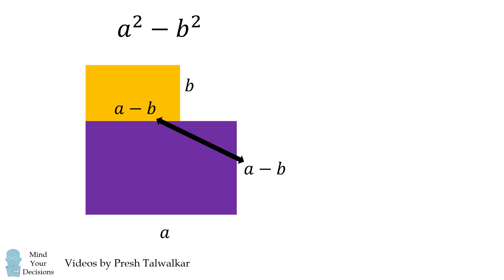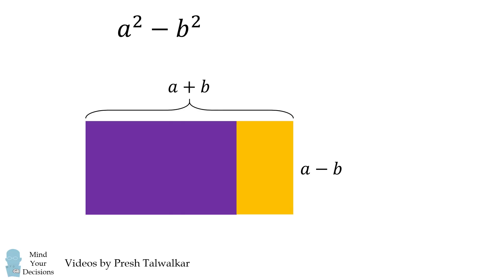The a minus b sides will connect together. The resulting shape is a rectangle where one side is a plus b and the other side is a minus b.